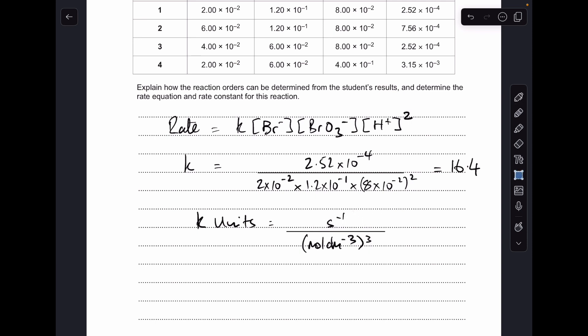So it cancels down to seconds to the minus one on the top, moles per decimeter cubed to the power three on the bottom. And all we need to do is take the units on the bottom up to the top, so that gives the units for k of decimeters to the nine, moles to the minus three, seconds to the minus one.